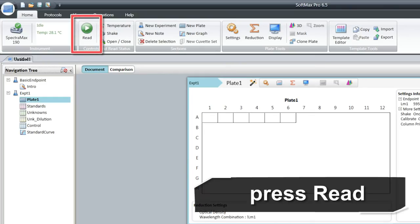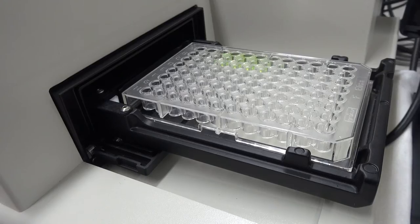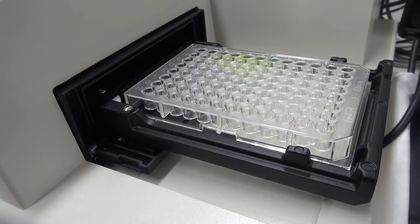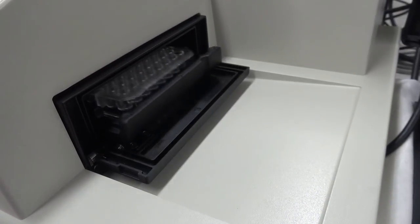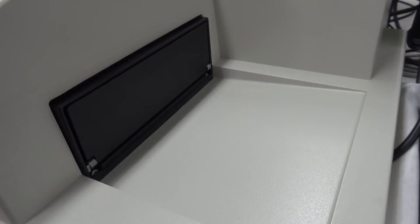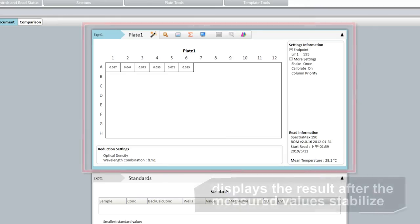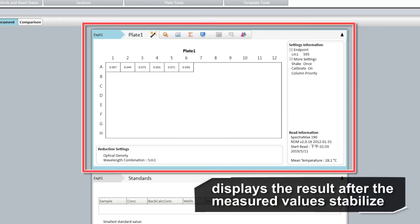5. Next, press read in control software. 6. The spectrophotometer takes in the microplate automatically and shakes it a few times before measuring. The computer screen displays the result after the measured values stabilize.